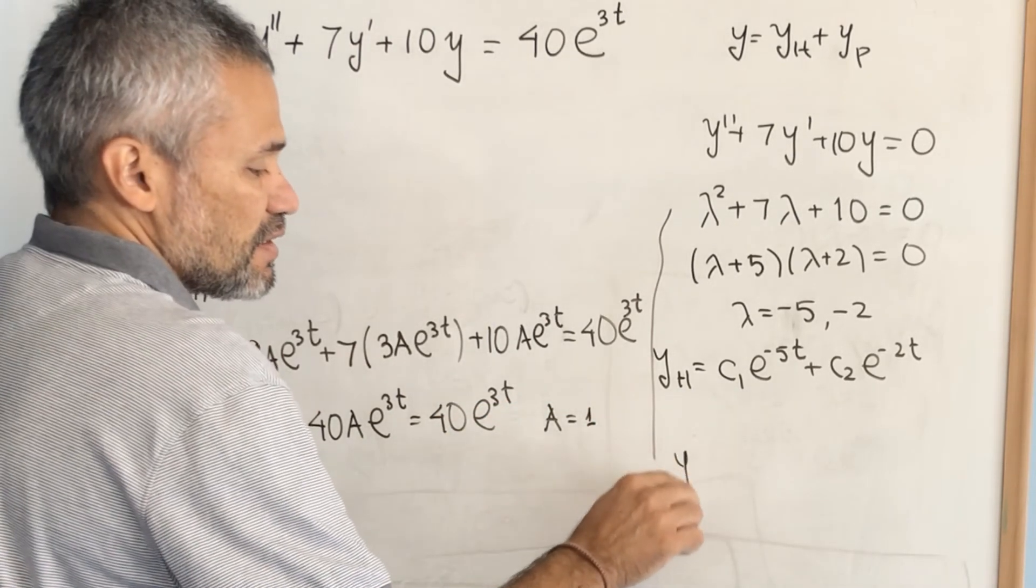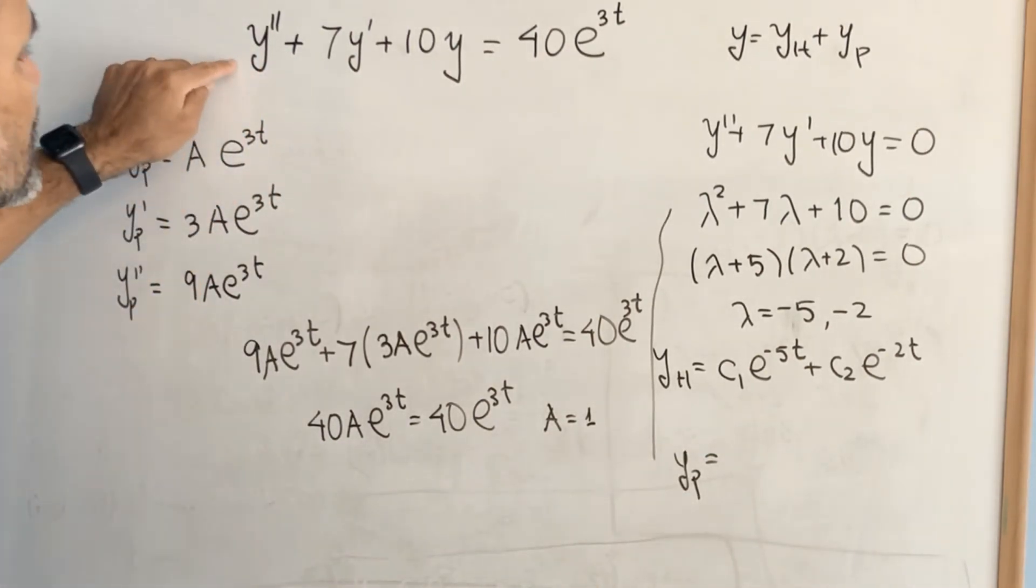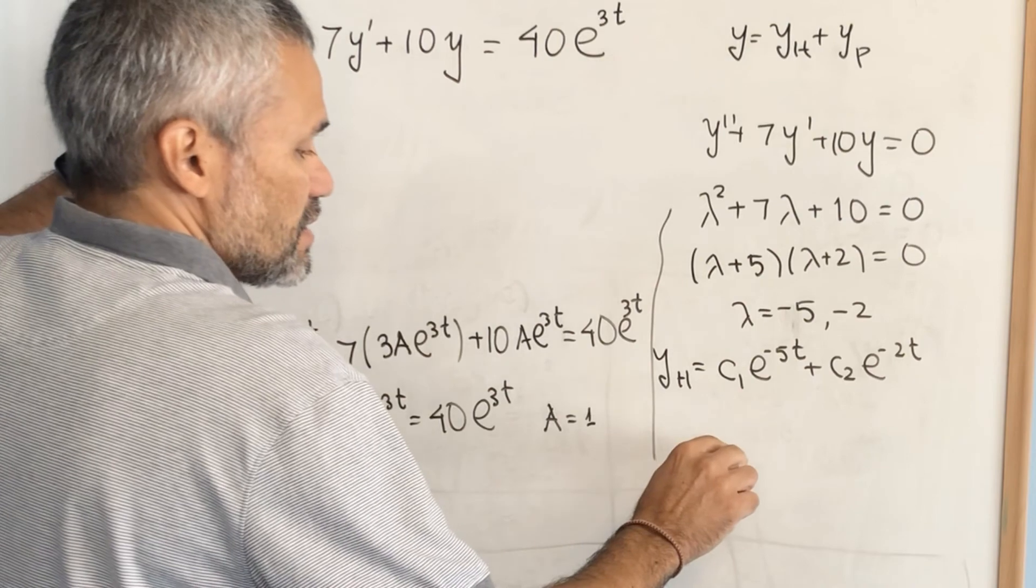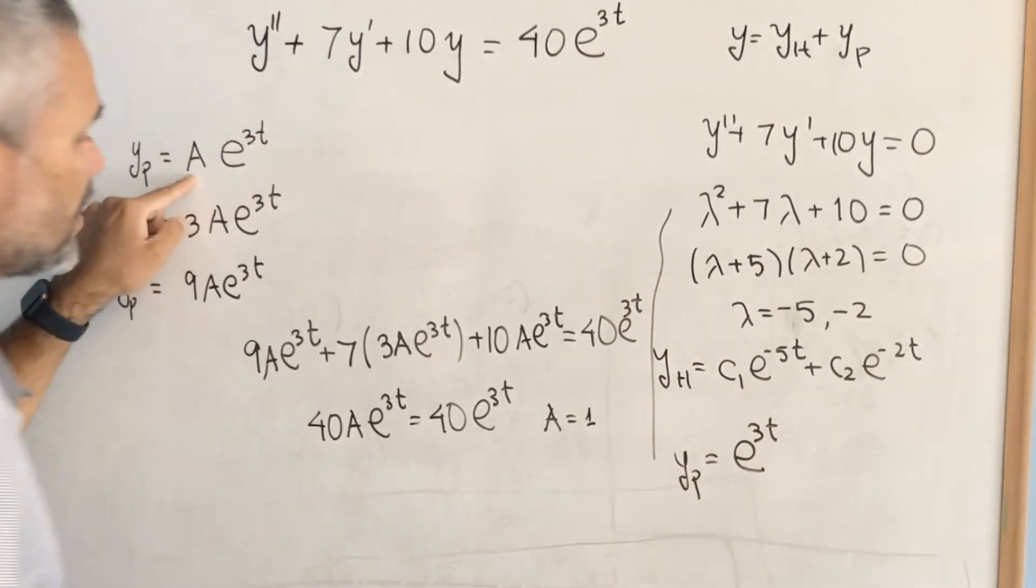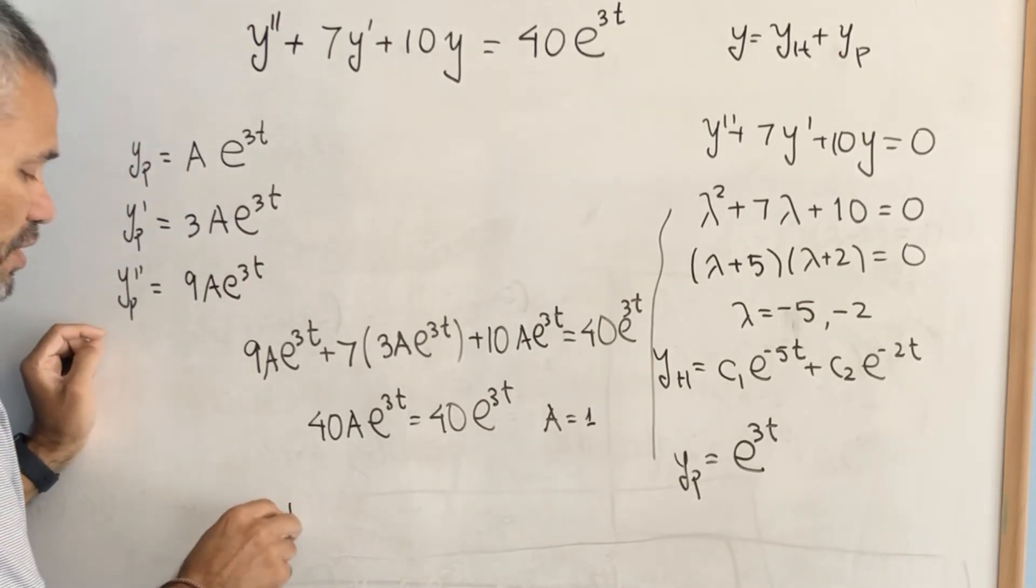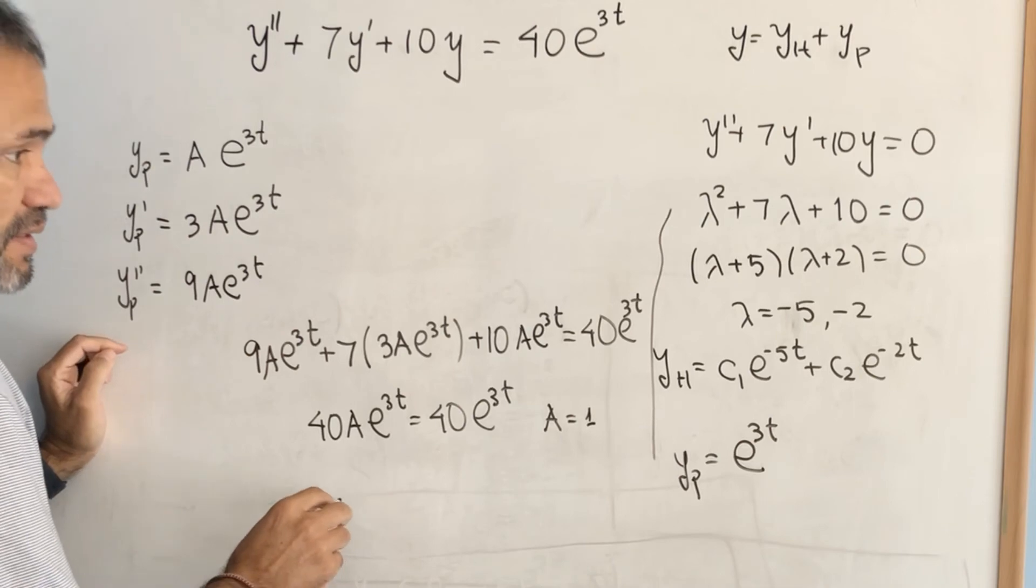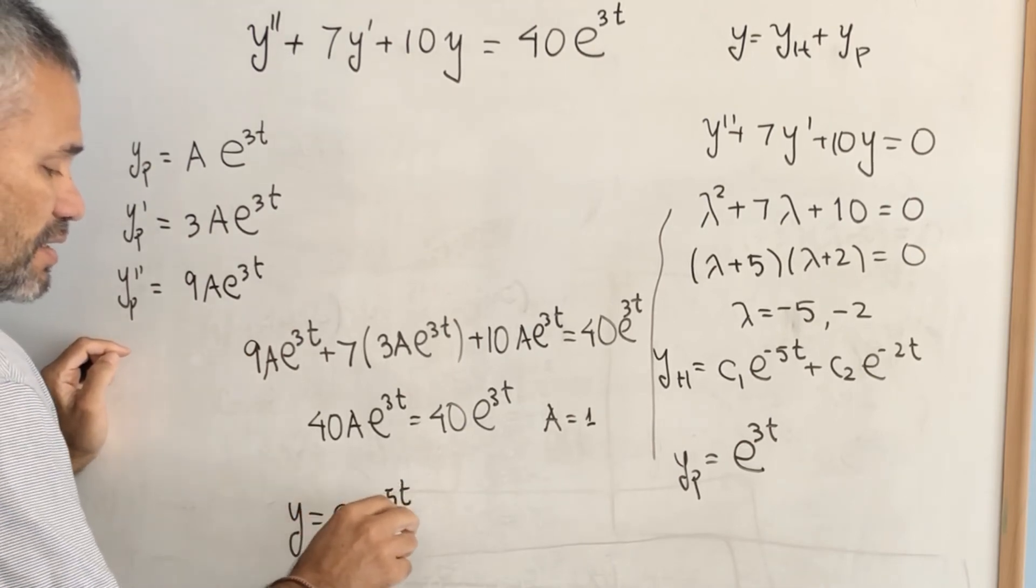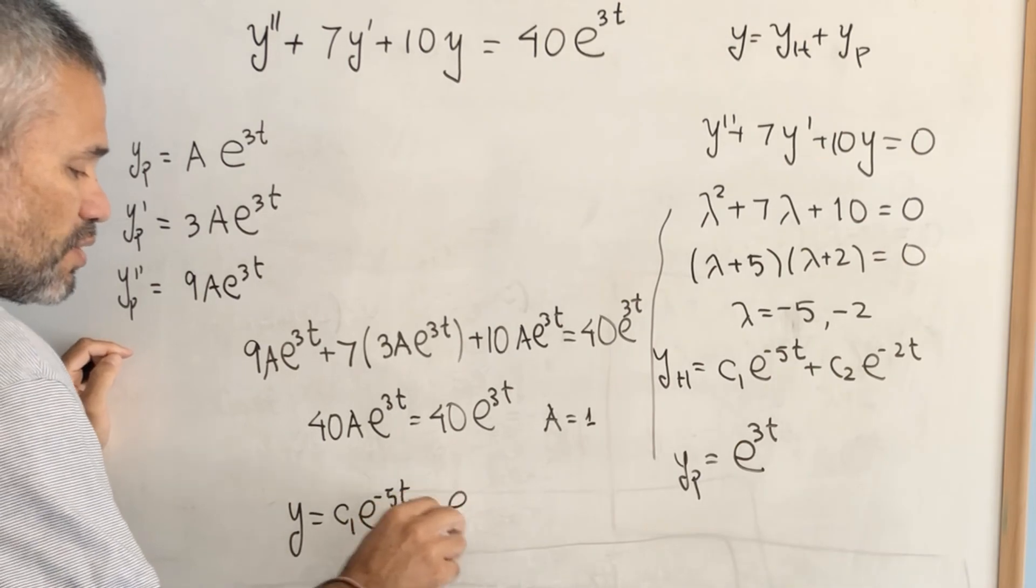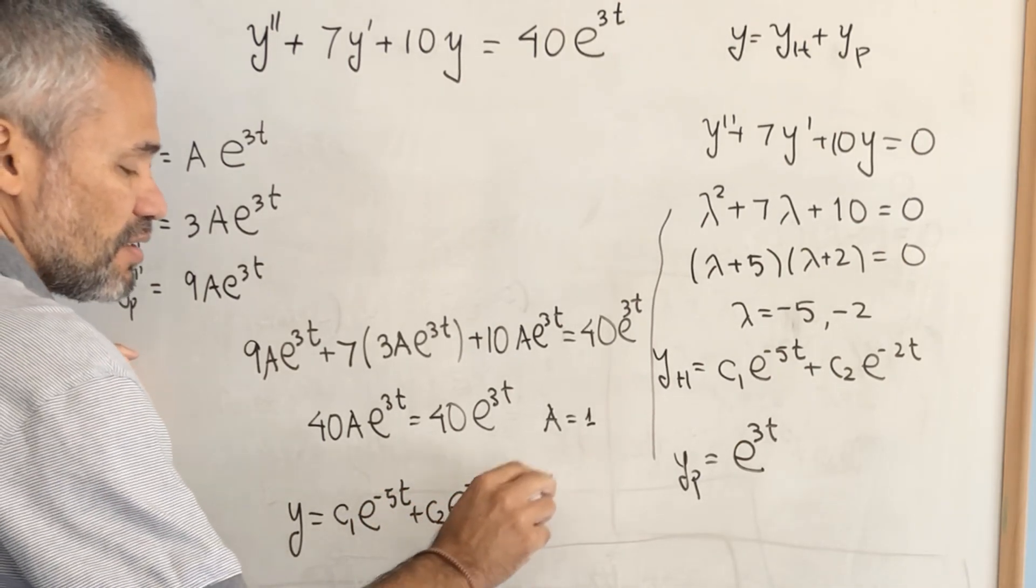And that means that the particular solution of this differential equation is e to the 3t because a is 1. And therefore, the general solution of this differential equation is c1 e to the negative 5t plus c2 e to the negative 2t plus e to the 3t.